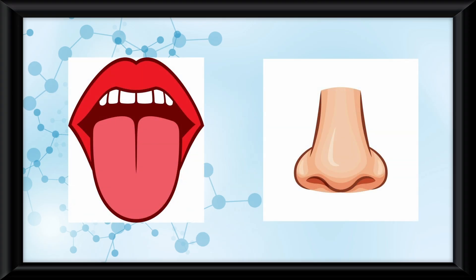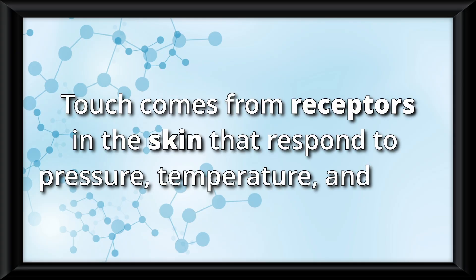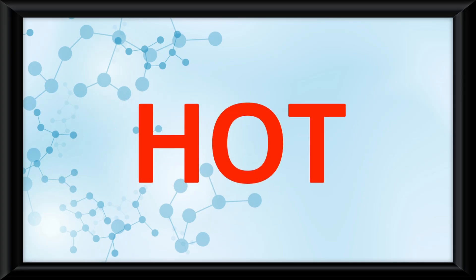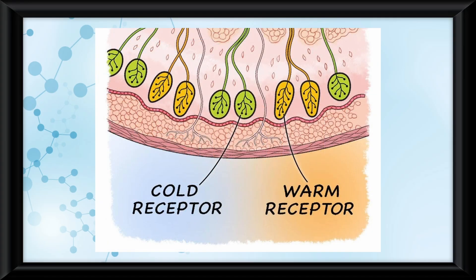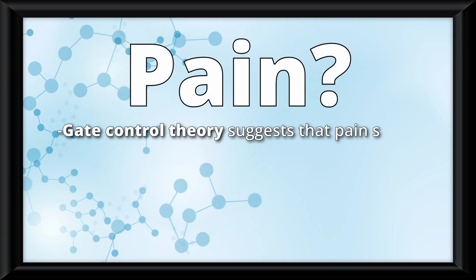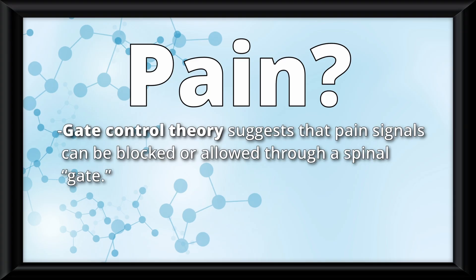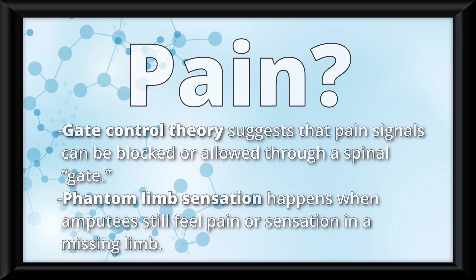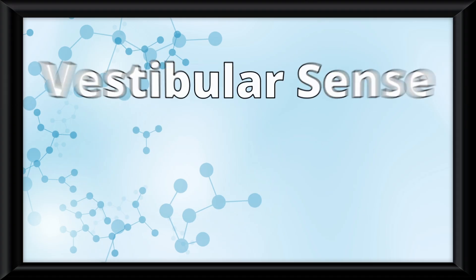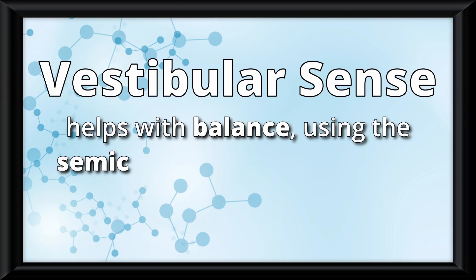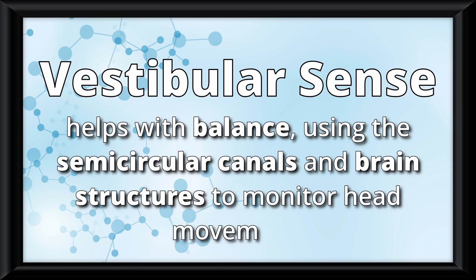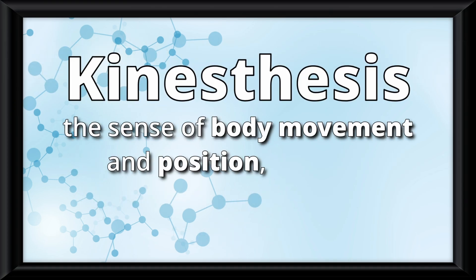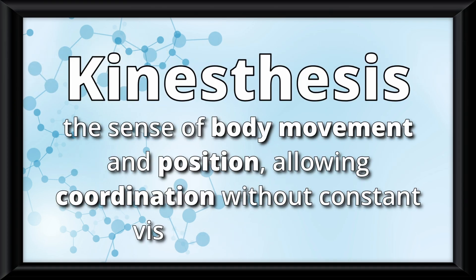Taste and smell interact strongly to create flavor. For the somatosenses, touch comes from receptors in the skin that respond to pressure, temperature, and pain. The sensation of hot comes from combined activation of warm and cold receptors. Pain is complex — the gate control theory suggests that pain signals can be blocked through a spinal gate. Phantom-limb sensation happens when amputees still feel pain or sensation in a missing limb. Finally, the vestibular sense helps with balance, using the semicircular canals and brain structures to monitor head movement. Kinesthesis is the sense of body movement and position, allowing coordination without constant visual monitoring.